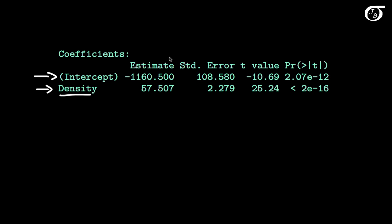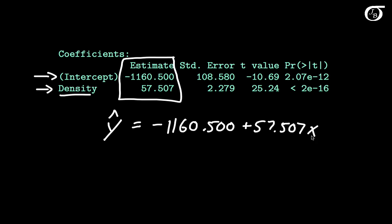Right now our point of interest is simply getting the line, and that's given in this first column. These other values have some meaning for us, but not at this moment. What this line is telling me is that the least squares regression line is Y hat is equal to minus 1160.500 plus 57.507 times X.